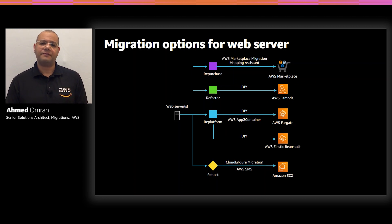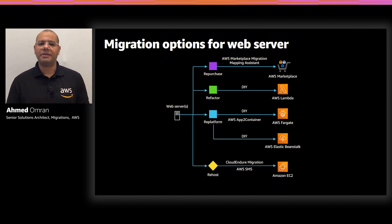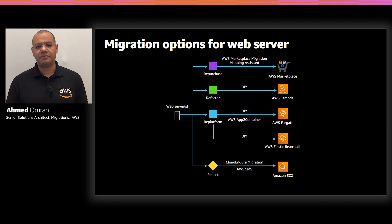The second option is re-platform. This is where you will make a few cloud optimizations in order to achieve tangible benefits. You may be looking to eliminate the undifferentiated heavy lifting of server management by migrating to AWS Fargate, which is a serverless compute engine for containers, or migrating your application to a fully managed platform like AWS Elastic Beanstalk, where you upload your code and the service automatically handles the deployment from capacity provisioning, load balancing, and auto scaling to application health monitoring.